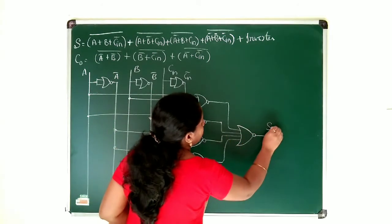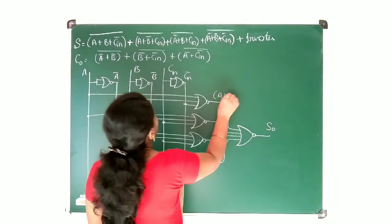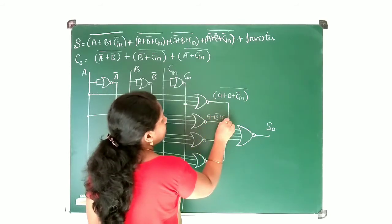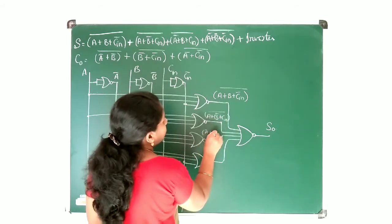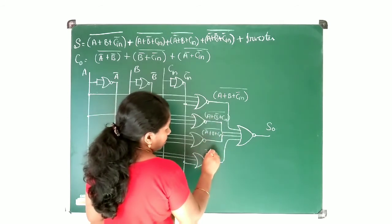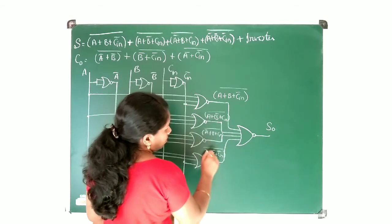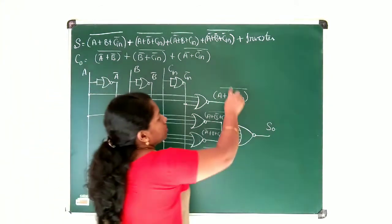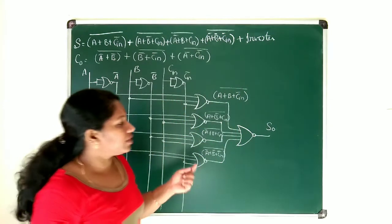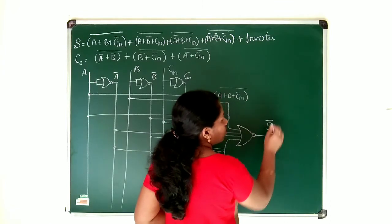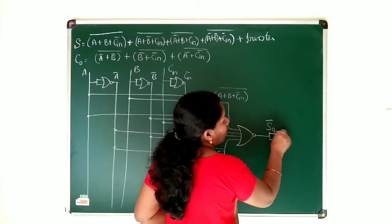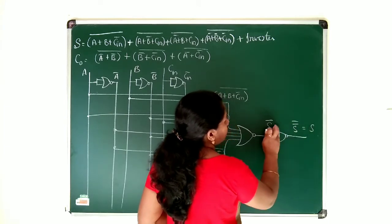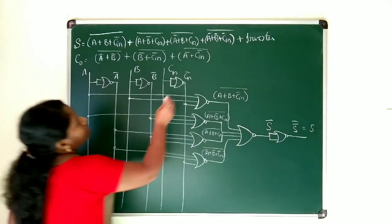So, this is your S-naught. You can write the terms here: A plus B plus C-in bar, whole bar; here A plus B bar plus C-in, whole bar; here A bar plus B plus C-in, whole bar; and here A bar plus B bar plus C-in bar, whole bar. Here, all these things you will be getting at S-naught. But wait — the whole complement is missing, so I need to use one more inverter. This is S-naught bar you have got here. To get S-naught, I will be using an inverter here. This will be giving you S double bar, that is, the S output — output sum.